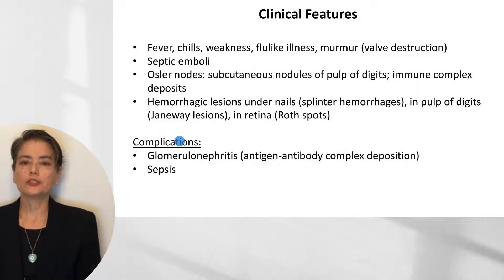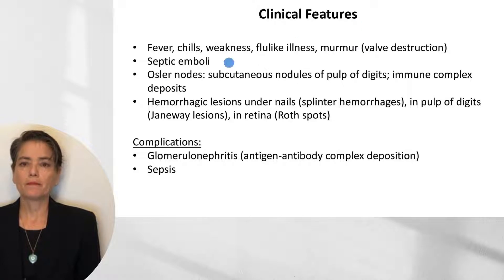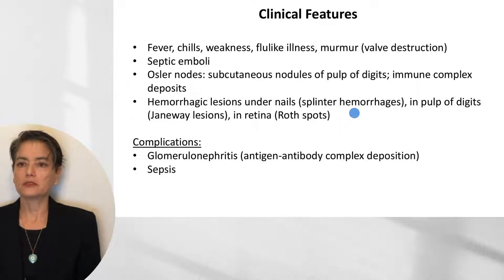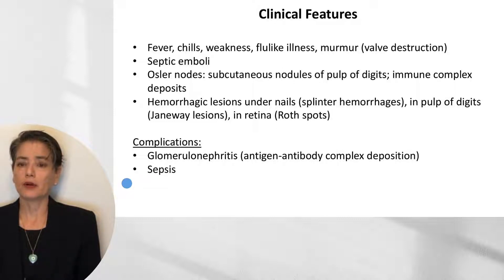There are a variety of clinical features we see in infective endocarditis: fevers, chills, weakness, and a flu-like illness. If there is valve destruction, we can hear a murmur. Septic emboli can give rise to hemorrhagic lesions under the nails. We can also get Osler nodes — subcutaneous nodules of the pulp of the digits due to immune complex deposits. Hemorrhagic lesions include splinter hemorrhages, Janeway lesions, and Roth spots. Complications include glomerulonephritis due to antigen-antibody complex deposition, and sepsis.